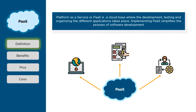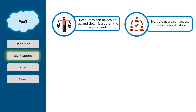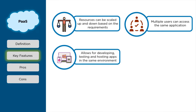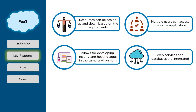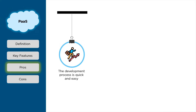Platform as a Service is a developer programming platform used for programmers to develop, test, run, and manage applications. A developer drives the applications and deploys them directly into this layer, and all the infrastructure runs over the internet. Benefits include: resources scaled up and down based on user requirements; multiple users can access the same application; testing and hosting in the same environment; web services, databases, and servers integrated into one; and teams can collaborate easily.